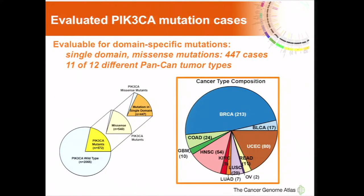To look at domain-specific mutations, we filtered to use only nonsense mutations, since we're interested in coding gain-of-function abnormalities, and also mutations that occurred in only one domain. In nearly 100 of the cases there were multiple mutations across PIK3CA. We ended up with a set of 447 cases to evaluate, and again have an uneven distribution across tumor types that will have to be accounted for.